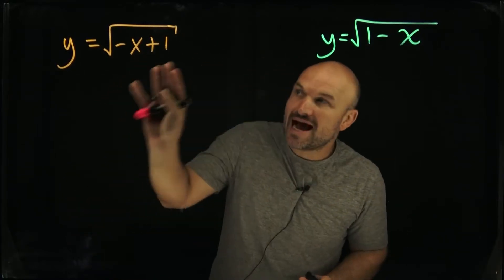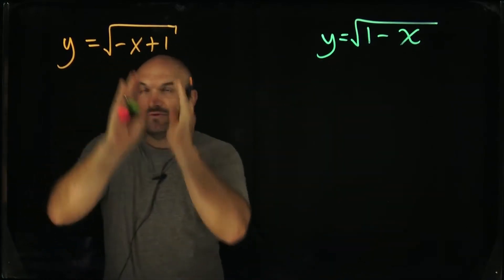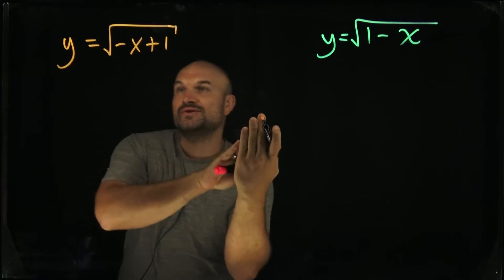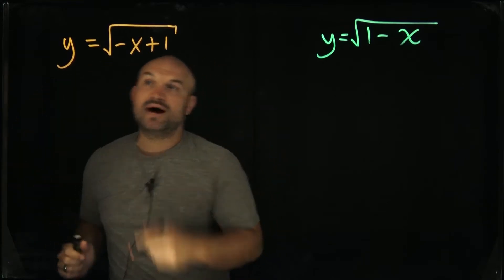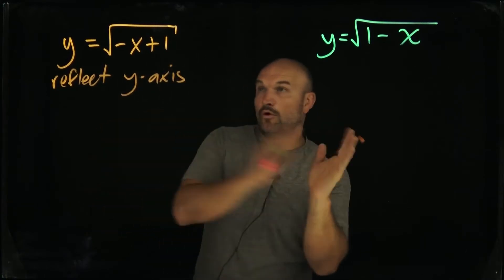But if you're identifying the transformations, you do not want to use this because what students will do is they'll say, well, this is going to have a reflection. Everything's inside, so we're going to have a horizontal reflection about the y-axis. And then they'll say, we're going to have horizontal transformations.